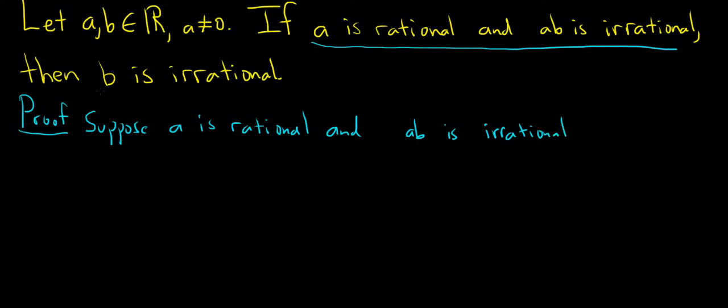And now we're going to use a proof by contradiction. So we assume that our conclusion is false. So we'll say but suppose further to the contrary, just to emphasize that we're doing a proof by contradiction, that B is rational.